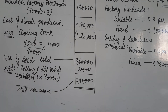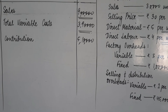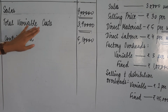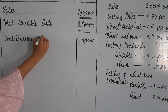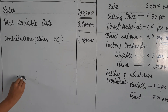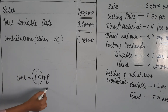Ab yahaan se hum nikaalenge apna contribution. Humare paas total variable cost aa chuki hai — ₹3,90,000. Sales humne starting mein mention ki hui thi. Unke difference ko contribution kehte hain: sales minus variable cost. Contribution formula: contribution equals fixed cost plus profit. So our contribution is ₹9,00,000 minus ₹3,90,000 = ₹5,10,000.